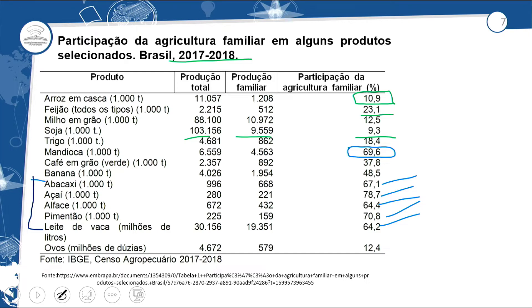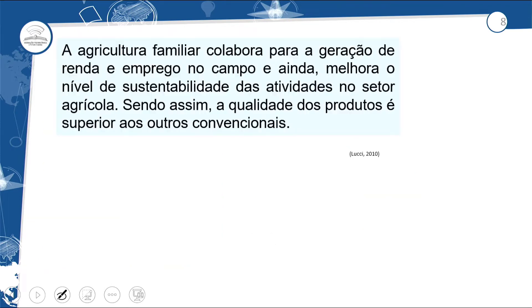A agricultura familiar colabora para a geração de renda e emprego no campo e melhora o nível de sustentabilidade das atividades no setor agrícola. A qualidade dos produtos é superior aos convencionais. Por exemplo, aquele vizinho do sítio que sabe a técnica de plantar e colher pimentão — quando a produção familiar não é suficiente só para a família trabalhar, ele já gerou emprego para o vizinho que estava sem emprego.